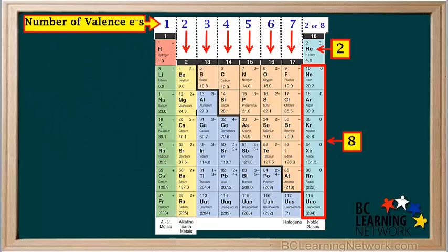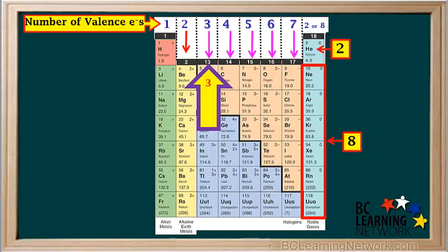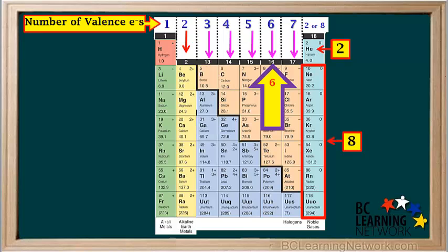Here's an easy way to find the number of valence electrons in an atom. Elements in the same vertical column or group on the periodic table have the same number of valence electrons. For example, all of the elements in group 1 have one valence electron, and all of the elements in group 2 have two valence electrons. Notice that for groups 13 to 17, the number of valence electrons is the same as the last digit in the group number. For example, the last digit in 13 is 3, and all of the elements in group 13 have three valence electrons. The last digit in 16 is 6, and all of the elements in group 16 have six valence electrons.